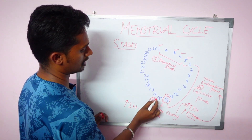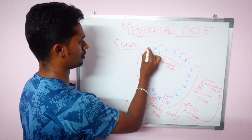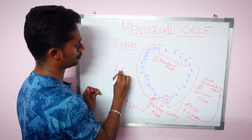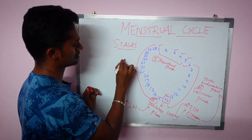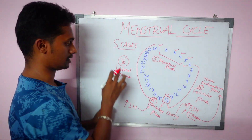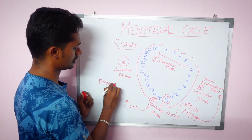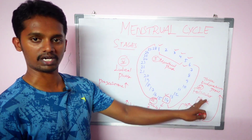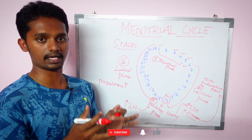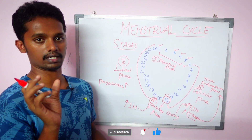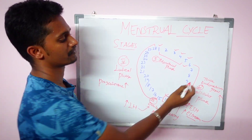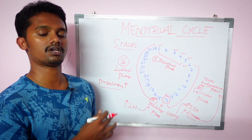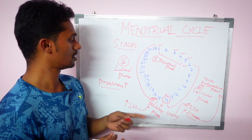Phase 4, the luteal phase, starts on day 15 and continues through day 28 — the last 14 days of the cycle. The key hormone in this phase is progesterone. Progesterone maintains the thick endometrium, preparing it to receive a fertilized egg. If a fertilized egg (zygote) is implanted into the endometrium, progesterone keeps it safe to support pregnancy.